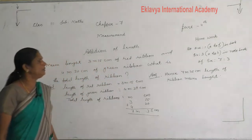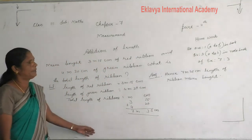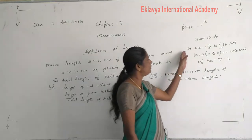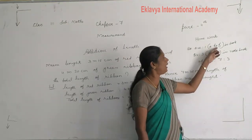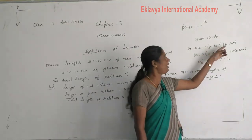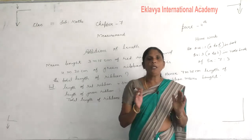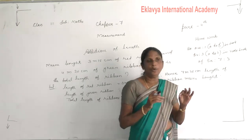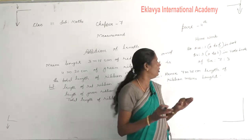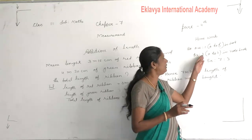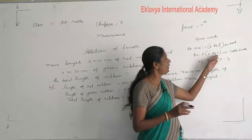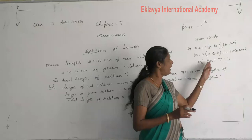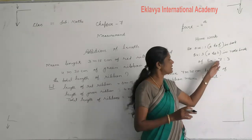Understand? Then question number 1, A to F, do in book. You fill in the book. This is an addition — you do in book. Question number 3, A to X, in notebook, exercise 7.3.